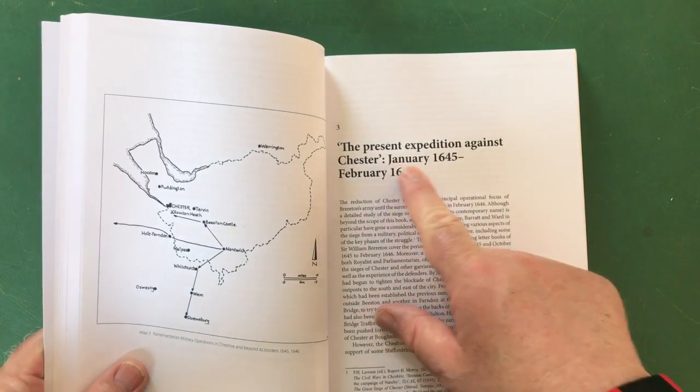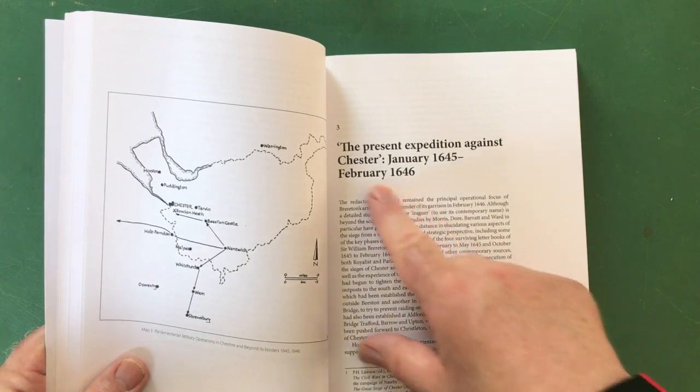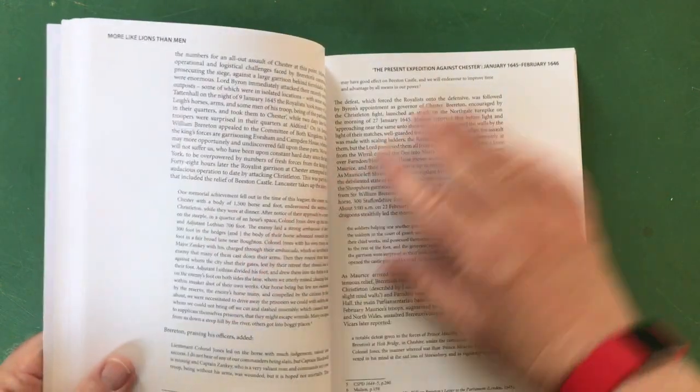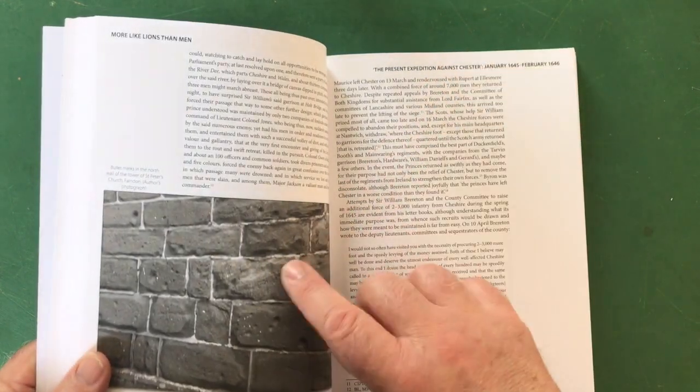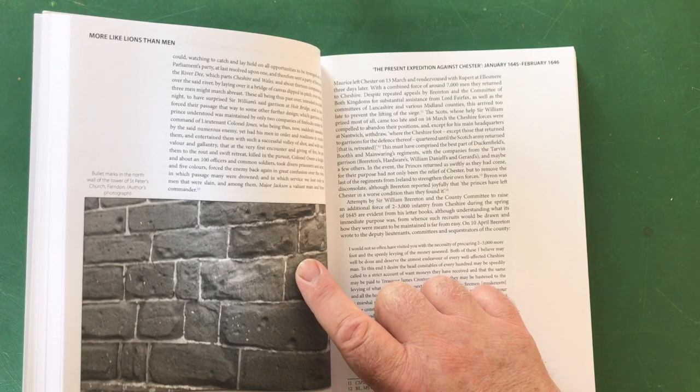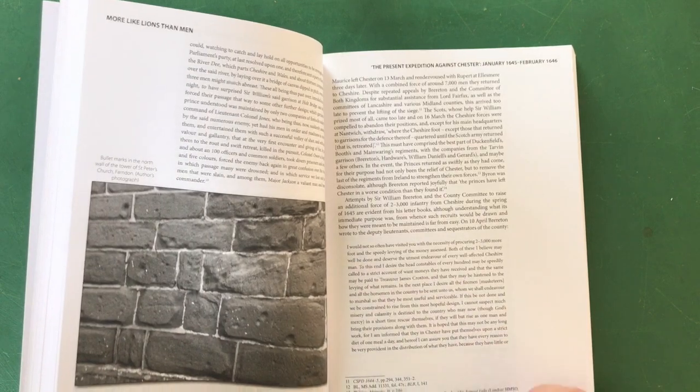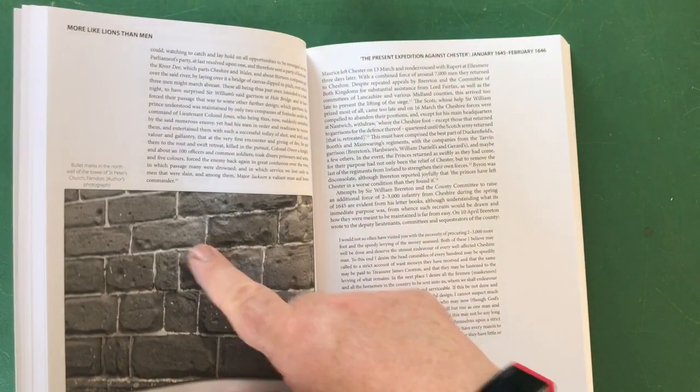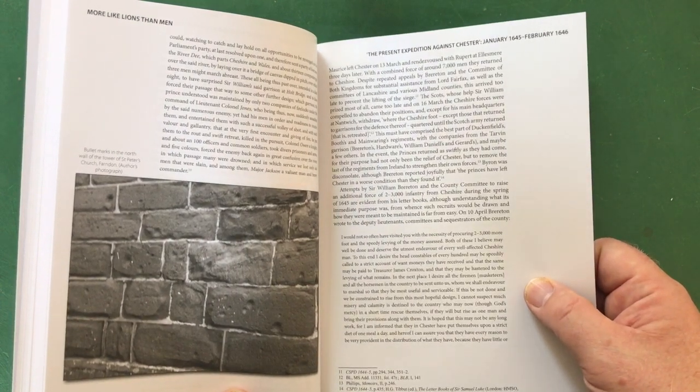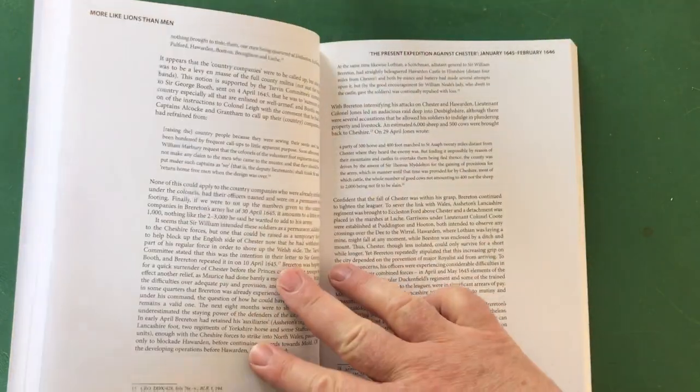Then we move on to the latter part - the present expedition against Cheshire January 1645 to February 1646. Nice photograph here of bullet marks in the north wall of the tower of St Peter's church in Farndon - musket ball bullets of course, but very clear. You can just very clearly see the indentations in the brickwork and they've been there standing there for crikey, 350, getting on for 400 years now, my goodness me.